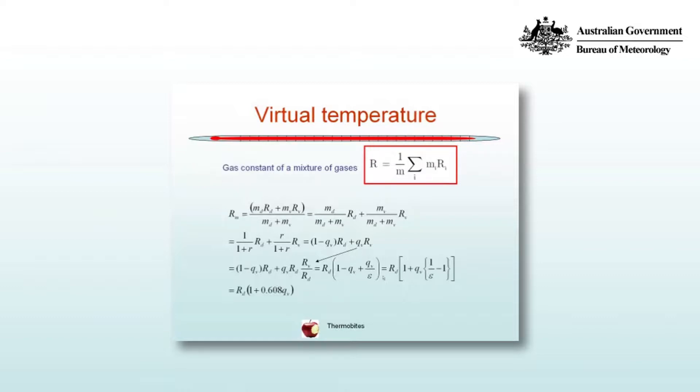R is equal to 1 on M multiplied by the sum of the Mi by the Ri, the individual gas species. So the specific gas constant of moist air is equal to MDRD plus MVRV on the total mass of the dry air and the vapor.